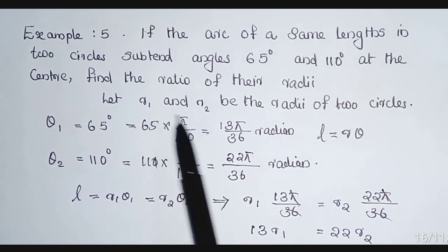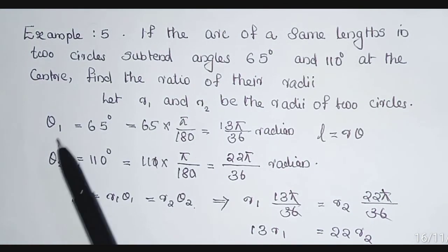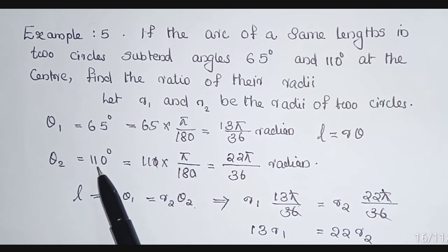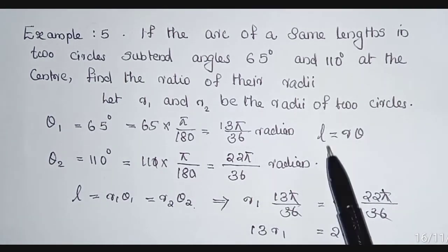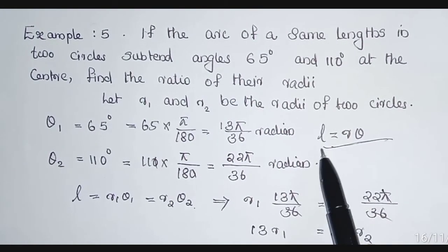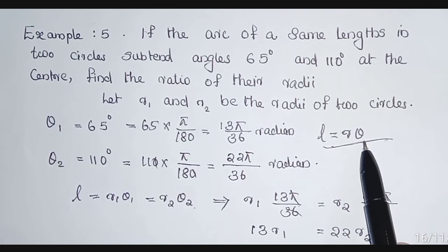We consider r₁ and r₂, and θ₁, θ₂ is given. θ₁ = 65°, θ₂ = 110°. We can use the equation l = rθ. l is the arc length, r is the radius, θ is the angle.